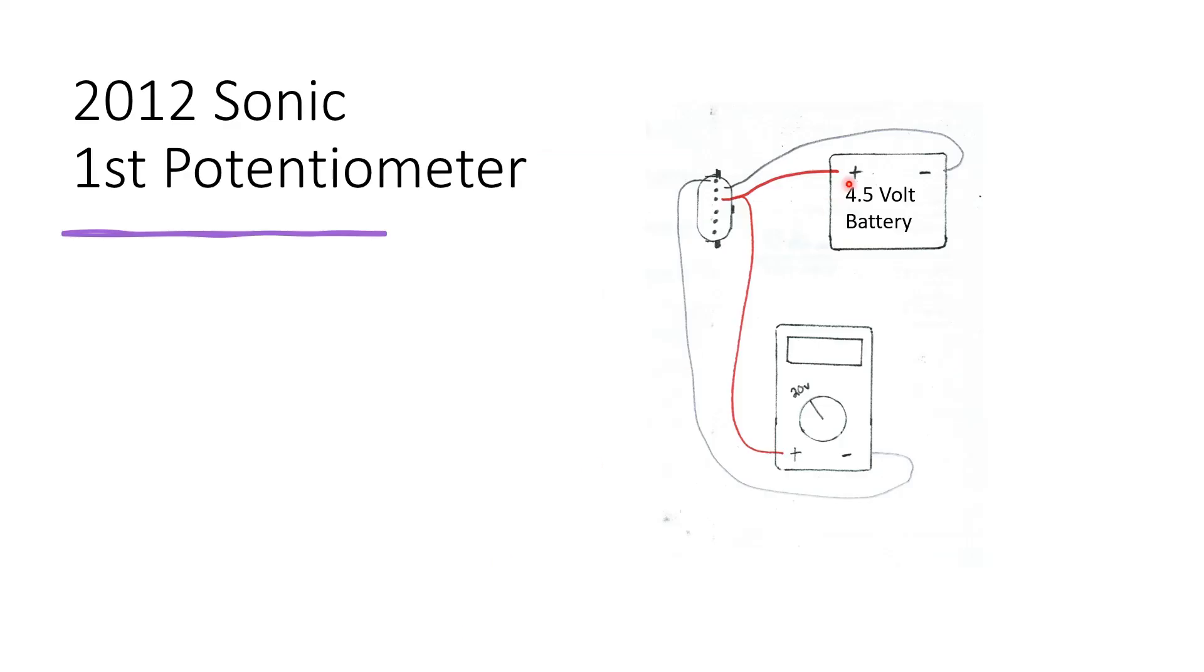After setting up the power supply, you're going to connect the positive from both the multimeter and the battery to this third middle pin. The negative from the battery is going to connect up to the second pin and negative from the multimeter is going to connect up to the top pin.